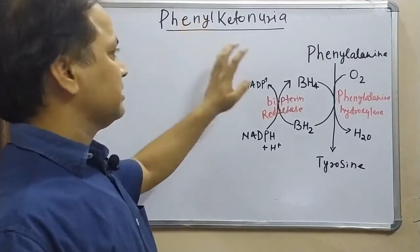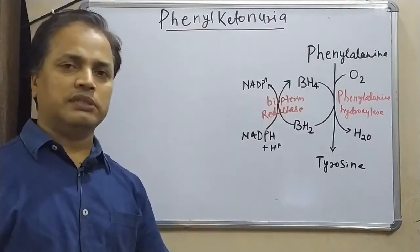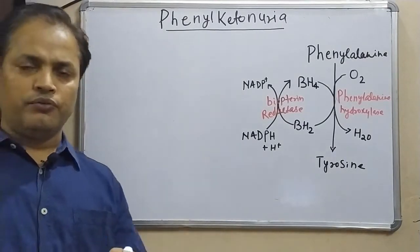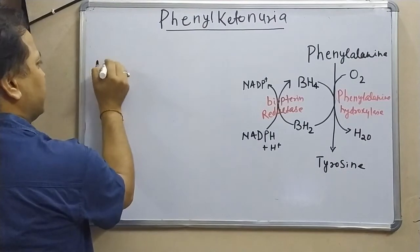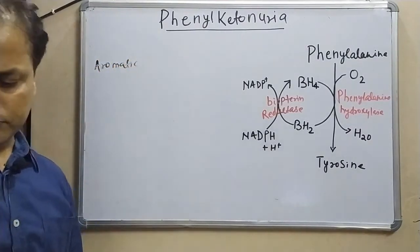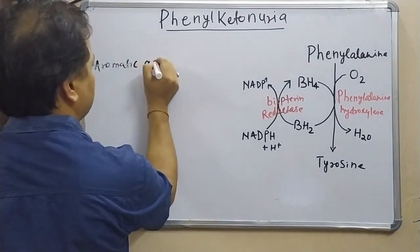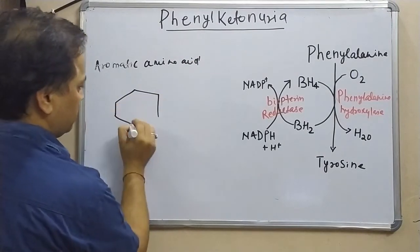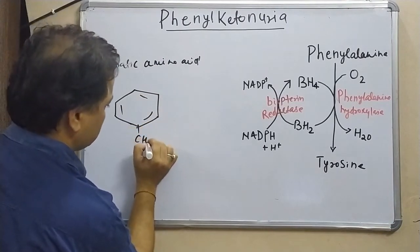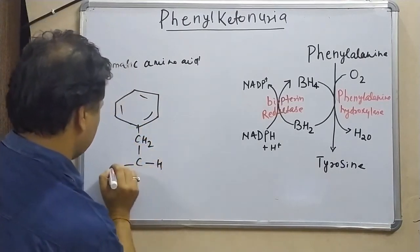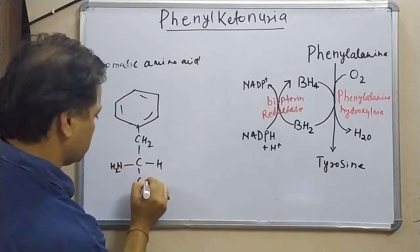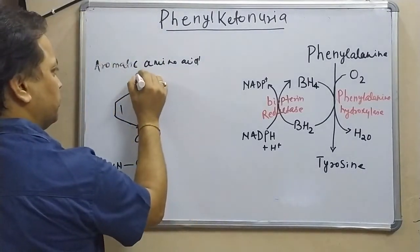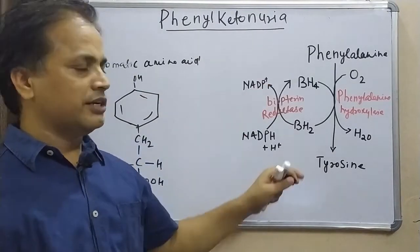Phenylketonuria, as the name suggests, is related to phenylalanine. Before talking about the disease, we should understand something about phenylalanine. Phenylalanine is an aromatic amino acid. Both phenylalanine and tyrosine are aromatic amino acids — phenylalanine has a benzene ring structure, while tyrosine differs by having an OH group attached.